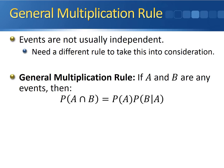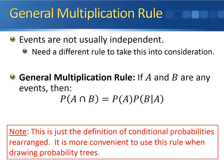What the general multiplication rule says is: if A and B are any two events, then the probability of A and B both occurring is equal to the marginal probability of A times the conditional probability of B given that A has already occurred. Notice that this is just the definition of conditional probability rearranged. Conditional probability told us the probability of B given A was equal to the joint probability divided by the marginal probability of the event that's already occurred. All we've done to get the general multiplication rule is rearrange that equation, which is a little more convenient to use when we set up probability trees.